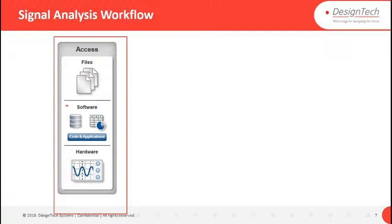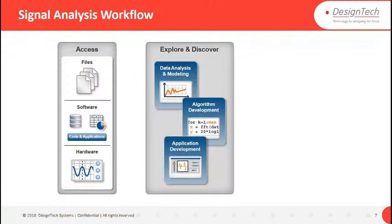Beyond file formats, MATLAB can interface with other languages like C, C++, or Java. It also supports live data from hardware — low-cost boards like Arduino, Raspberry Pi, or even an Android mobile with sensors can be accessed directly in MATLAB. Once data is accessed, pre-processing begins: removing noise, filling missing data, and handling spikes to prepare clean data for algorithm development.